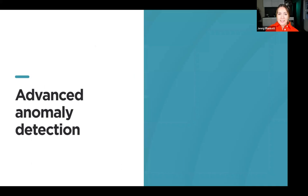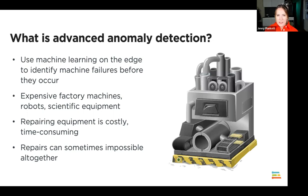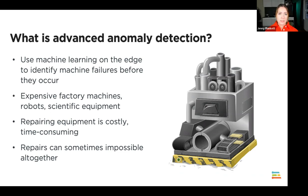Advanced anomaly detection uses machine learning on the Edge to identify potential machine faults or failures before they occur. This is really useful for expensive factory machines, robotics equipment, or scientific equipment — machinery that is expensive and that you don't want to break to collect training data. You can just detect when an anomaly is happening at the current point in time. Repairing this equipment is really costly and time consuming, so we want to find these anomalies before they happen.